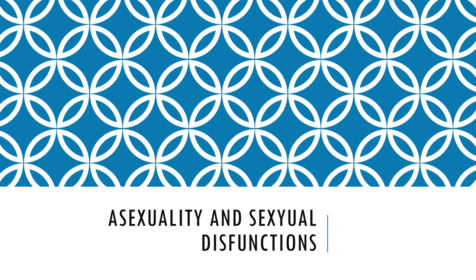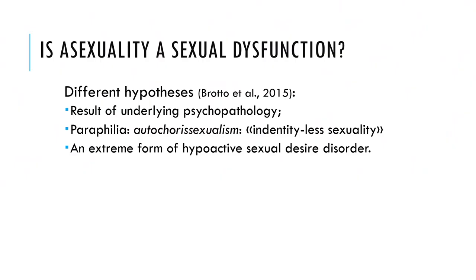A big issue for sex therapists is to discriminate between asexuality as sexual orientation and sexual dysfunctions. In the past, several hypotheses were proposed to explain asexuality, most suggesting a direct connection with psychopathology — including asexuality as a result of autism spectrum disorder or severe personality pathology like schizoid personality disorder. Asexuality has also been interpreted as a form of paraphilic disorder, namely identity-less sexuality, or as an extreme form of hypoactive sexual desire disorder.